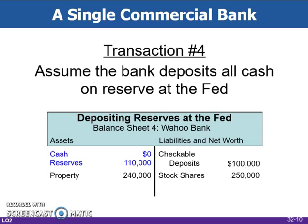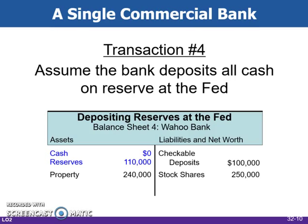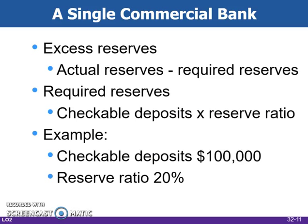In our T-account, the bank has decided to transfer all of its cash to the Federal Reserve Bank. The Federal Reserve serves as the banker's bank. In this instance, the Wahoo Bank has decided instead of keeping the $110,000 on hand, they'll deposit it into their account with the Federal Reserve. Notice there's no change on the liabilities and net worth side — the cash has just been transferred into the reserve account. In our example, the excess reserves equal $90,000, which is actual reserves of $110,000 minus the required reserve of $20,000.